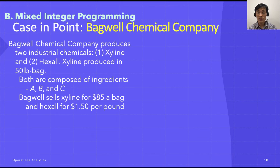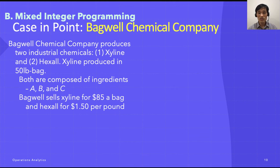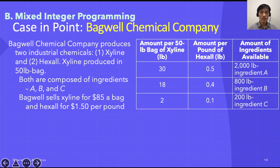This company is located in Jackson, Mississippi, and produces two industrial chemicals. The first product, Xylene, must be produced in 50-pound bags. The second, Hexol, is sold by the pound in dry bulk and hence can be produced in any quantity. Both Xylene and Hexol are composed of three ingredients, A, B, and C. Here are the requirements for the combinations.